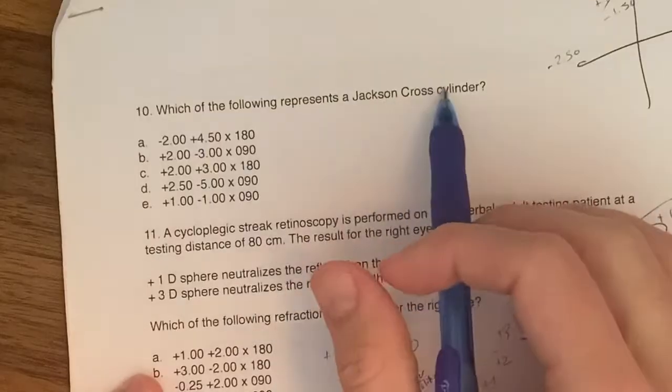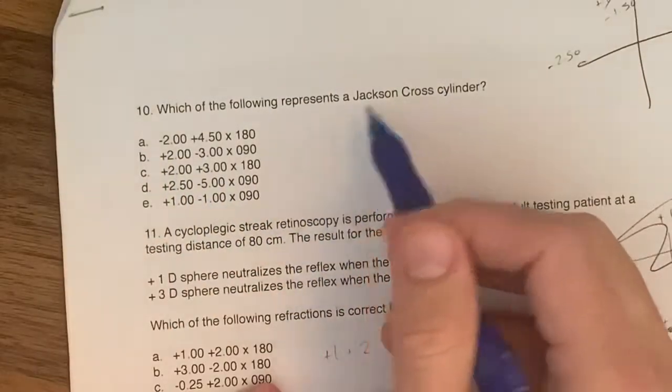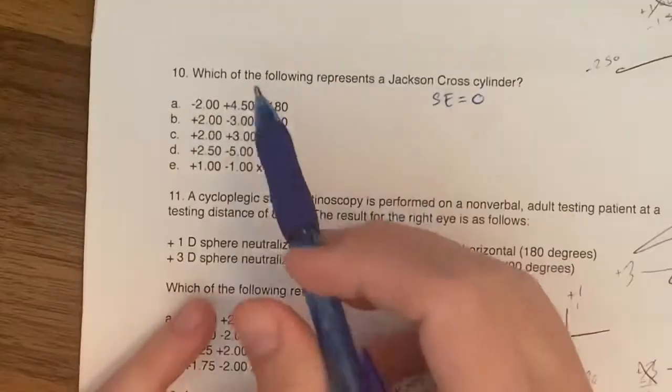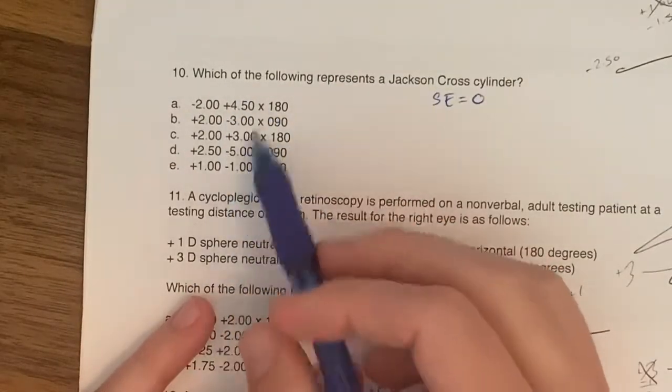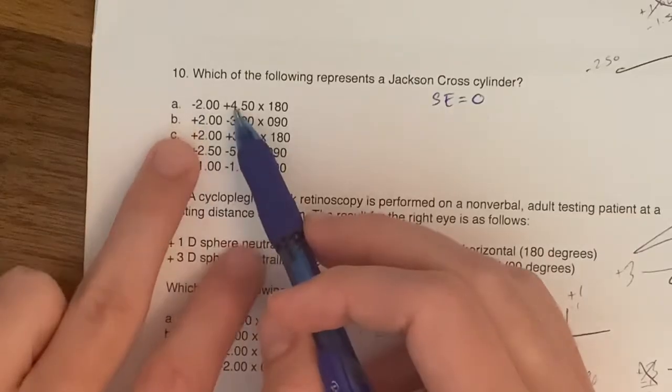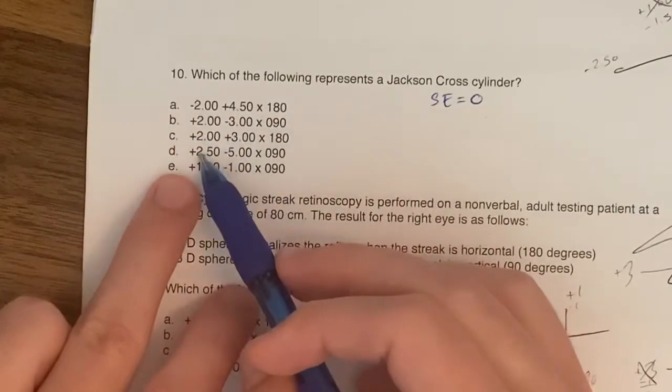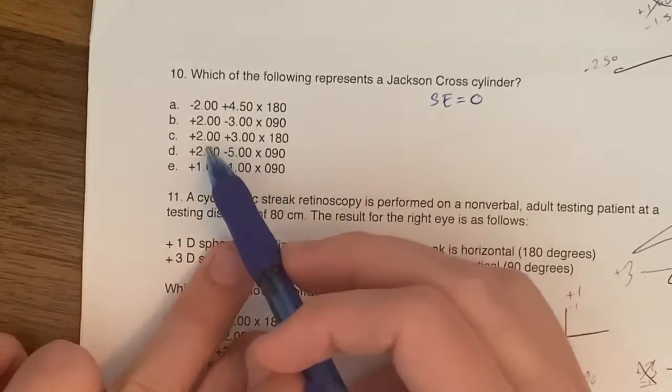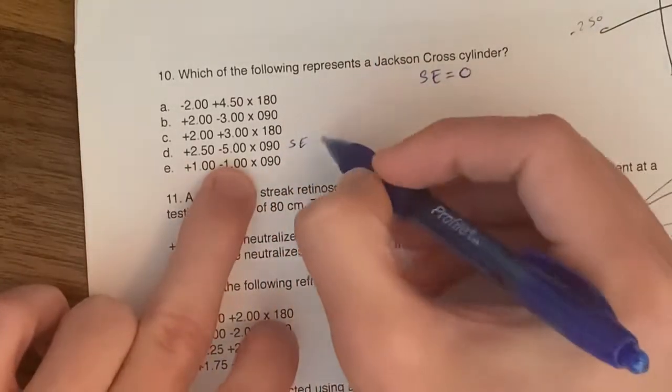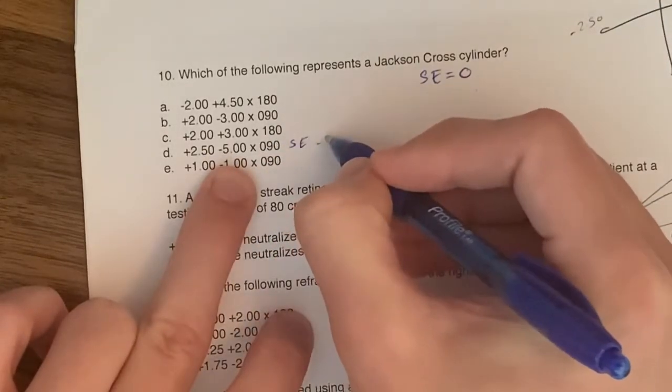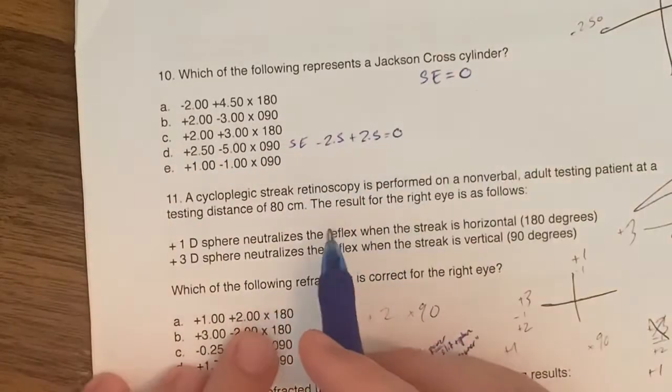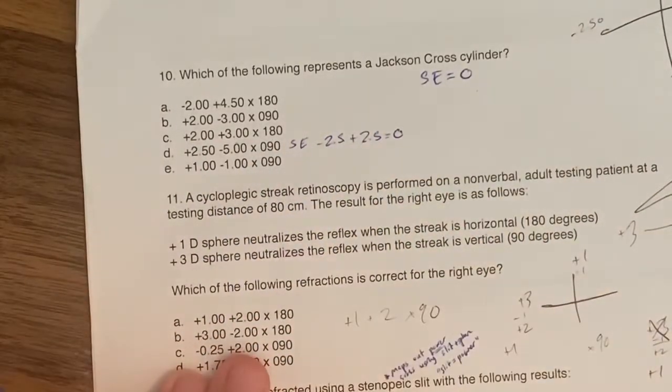Number 10, which of the following represents a Jackson cross cylinder? You just know that a Jackson cross cylinder has a spherical equivalence of zero or plano. That will mean we're looking for a cylinder that is double the sphere. So if this is 2, this would need to be 4. The cylinder is double the sphere. So if we calculate the spherical equivalence, it would be half the cylinder, which is minus 2.5, plus the sphere, which is 2.5, which equals zero. I'll do another video on the concept behind the Jackson cross cylinder later.